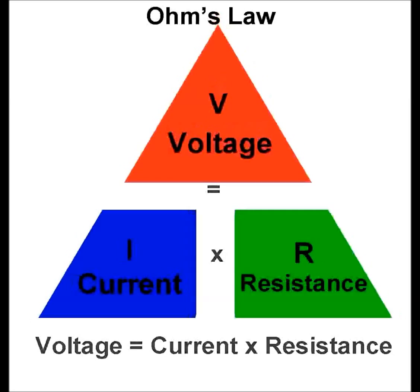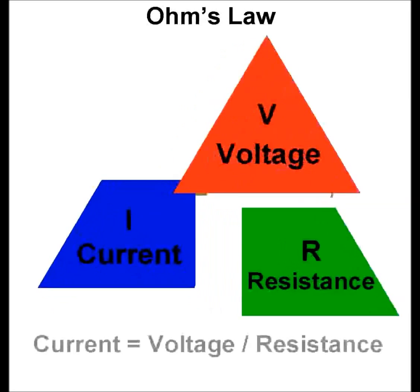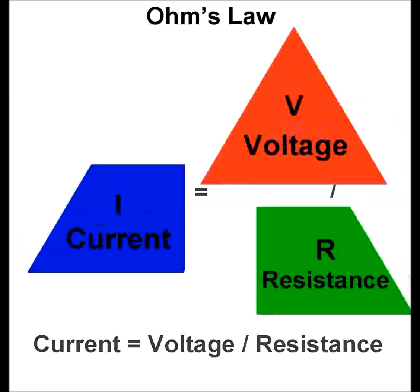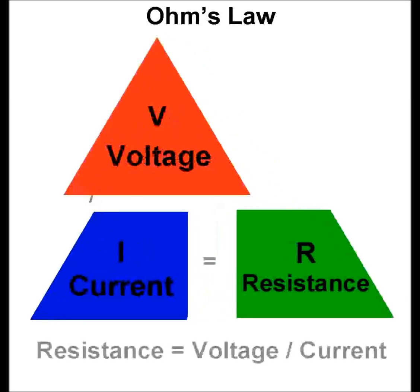This means that if we know any two we can work out the third. If we want to know what the current is, we can take the voltage and divide it by the resistance. Equally, if we want to know what the resistance is, we can take the voltage and divide it by the current.